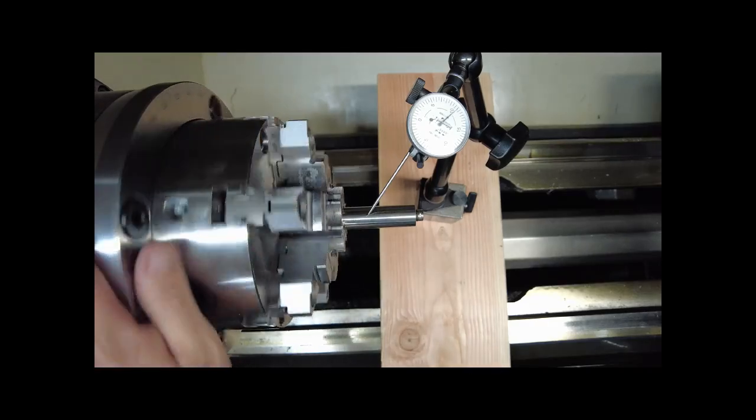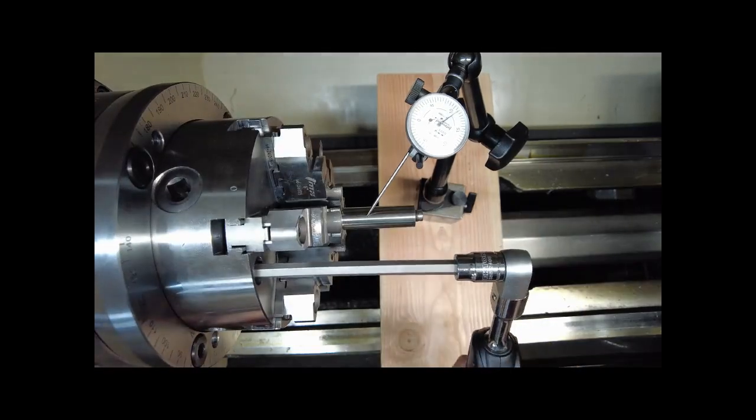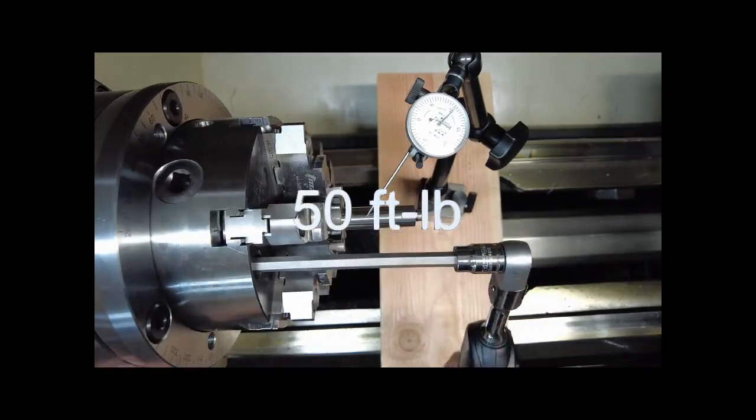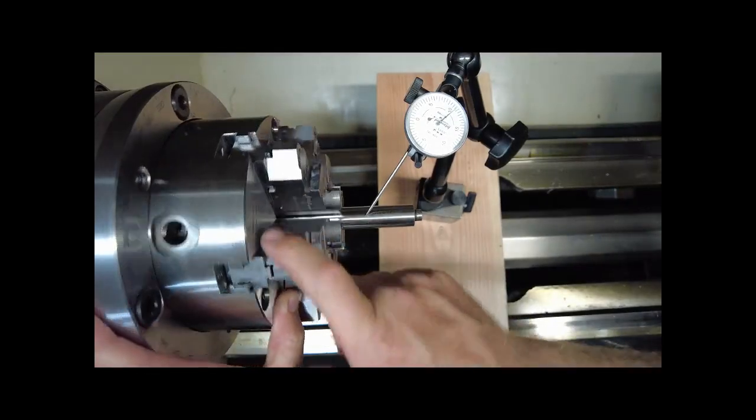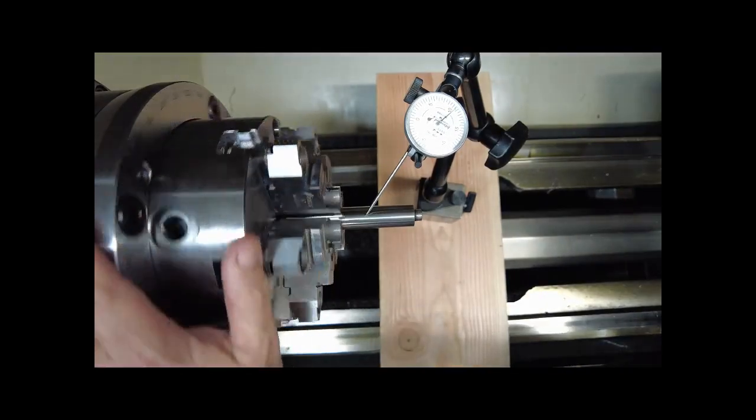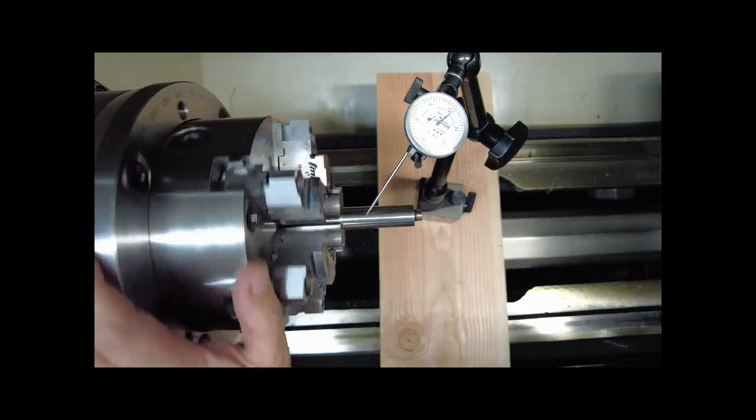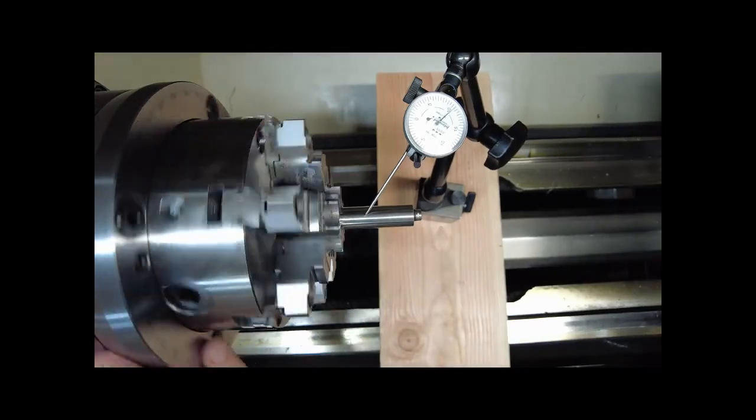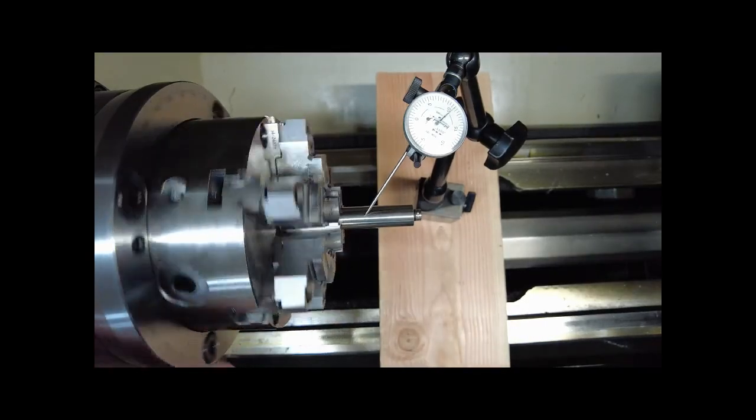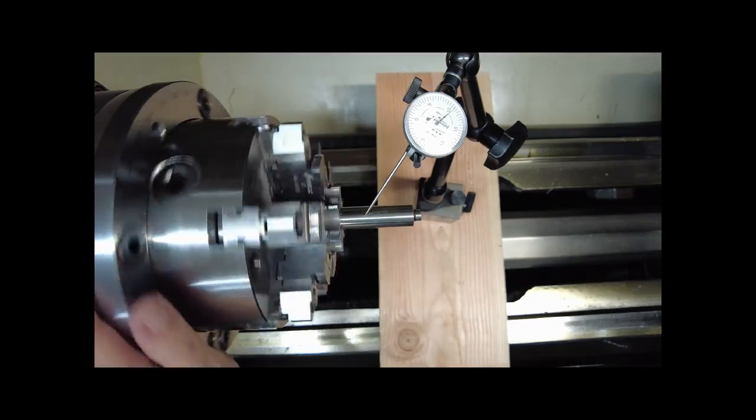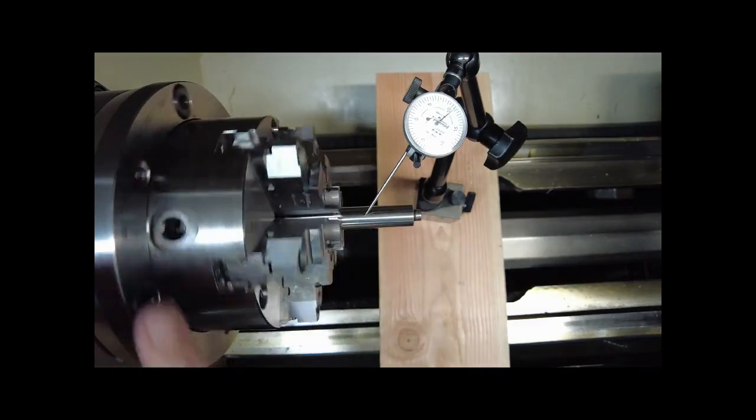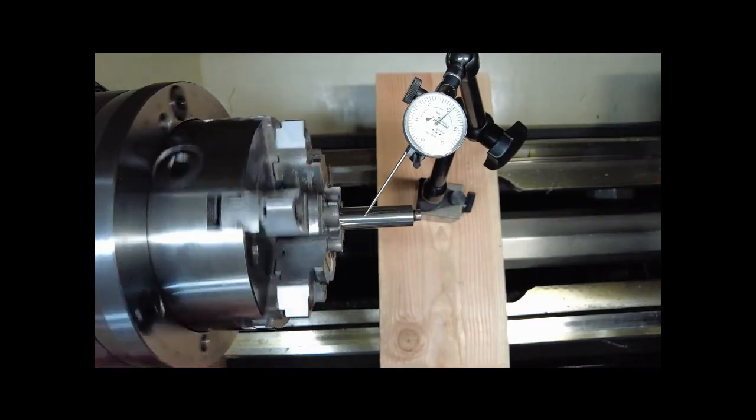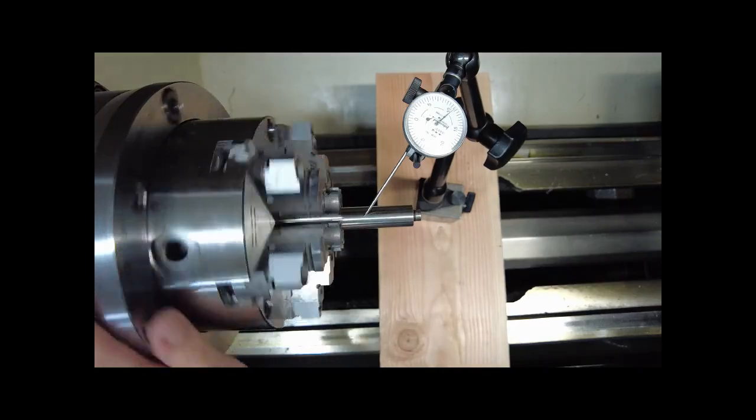Now we can finish torquing the chuck. If after torquing runout increases beyond one thou, loosen and redo this process. In this instance the chuck did not move during finished torquing, so the Truebore alignment system is ready for barrels and actions and any other lathe work you want to throw at it.